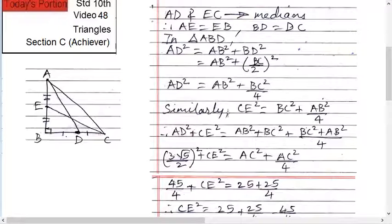Similarly, CE square equals BC square plus AB square upon 4.